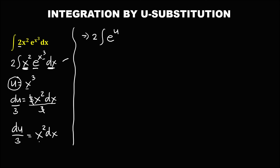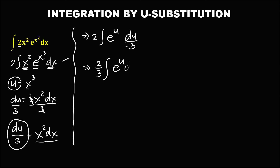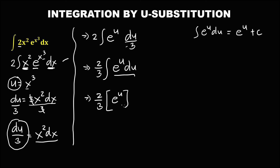Then for this x squared dx, since x squared dx is du over 3, so we have du over 3. Then to simplify, put this denominator 3 outside, so this becomes 2 over 3, then the integral of e to the power u du. Then to find the integral — since the integral of e to the power u du is equal to e to the power u plus C — so we have 2 over 3 times e to the power u, plus C. Then substitute now the value of u: u is equal to x to the power 3, so this is 2 over 3 times e to the power x to the power 3, plus C.